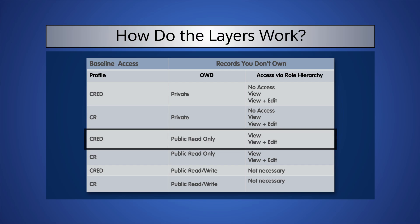If Alan's profile grants full permissions on the Opportunity object and the org-wide defaults are set to Public Read Only on Opportunities, Alan can see records owned by other users, and if those owners are below him in the hierarchy, the role settings will provide two options: View or View and Edit. The No Access option doesn't appear, since the role hierarchy can only open up access to records. It cannot restrict record access to less than what is granted through the org-wide defaults.